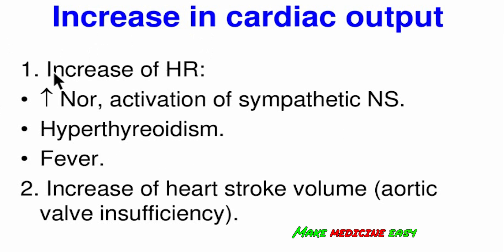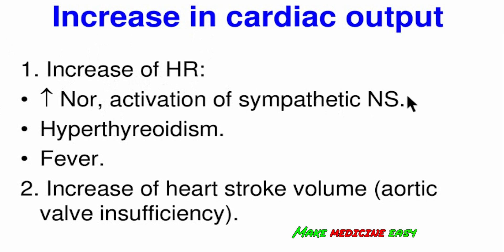Increased cardiac output can also lead to blood pressure increase. You can increase heart rate due to activation of the sympathetic system. In primary hypertension, we have hypersympathicotonia — excessive activation of the sympathetic nervous system — which leads to heart rate acceleration, increased cardiac output, and increased arterial blood pressure. Patients constitutively predisposed to hyperactivity of the sympathetic nervous system often present with blood pressure increase.